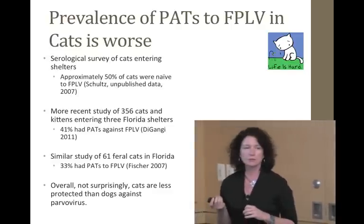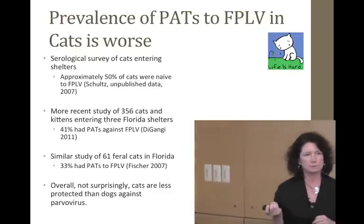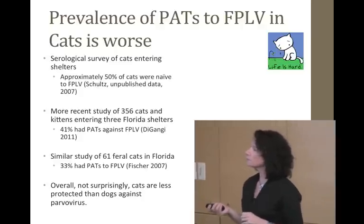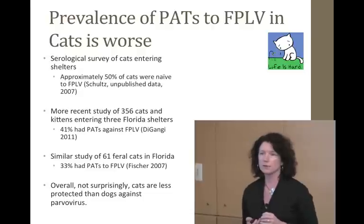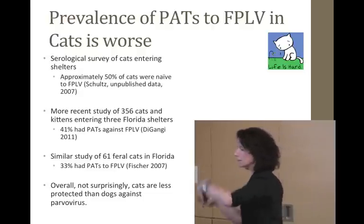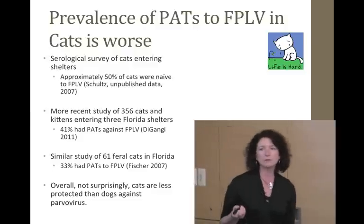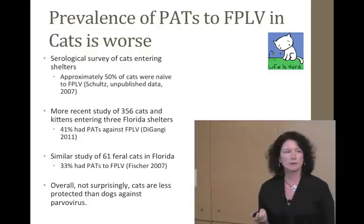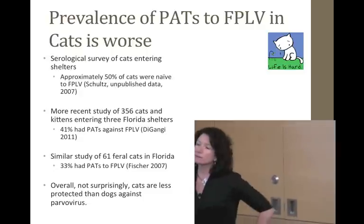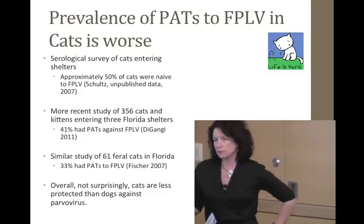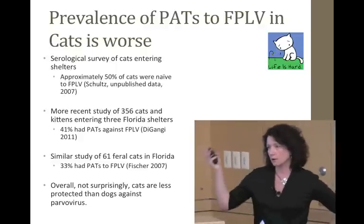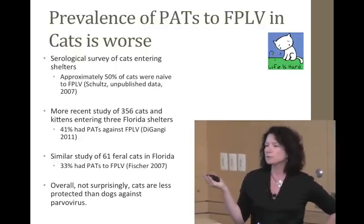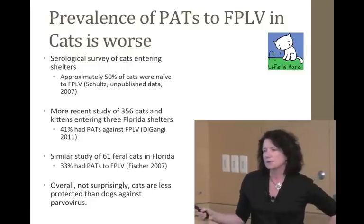A more recent study of 356 cats and kittens entering three Florida shelters found only 41% had protective antibodies against feline panleukopenia — meaning 60% of adult cats were susceptible. A similar study of 61 feral cats in Florida found only a third had protective antibodies. We used to believe feral cats developed natural immunity from colony exposure, but they really don't. Overall, cats are less protected than dogs against parvovirus. Recent studies from Chicago suggest similarly low protection rates, and regional data is often lacking because the work and funding aren't always there.